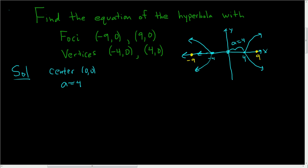And the distance from the center to one of the foci is c. So c is equal to 9 in this problem. So c equals 9. So we have a, we have c, we just need to find b.